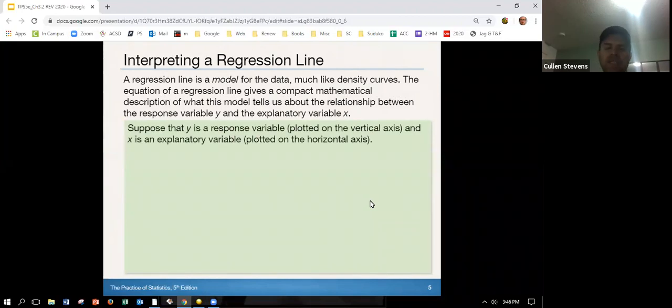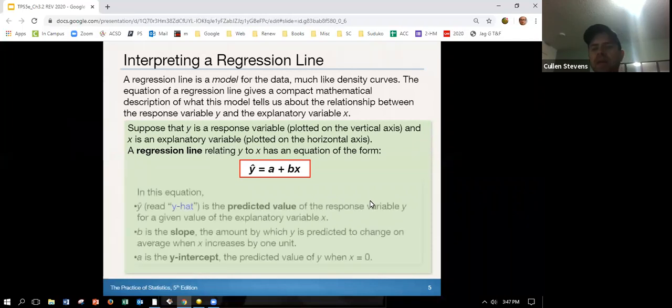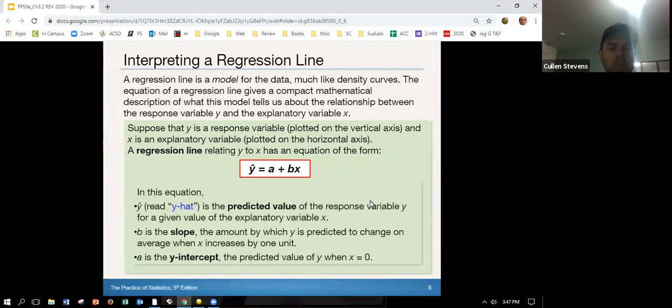So suppose that we have y as a response variable, plotted on the vertical axis, vertical like up and down, and x is the explanatory variable on the horizontal axis like the horizon. So the regression line y to x looks like this: y hat equals a plus bx. And so how we read that with the y hat, this is the predicted y. The predicted y is equal to a plus bx. Now what do those other variables mean? Well y hat is the predicted value of the response variable y for any given value of the explanatory variable x.